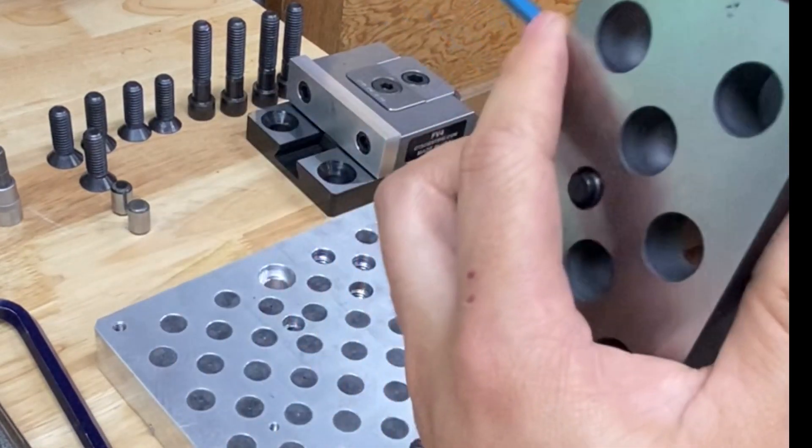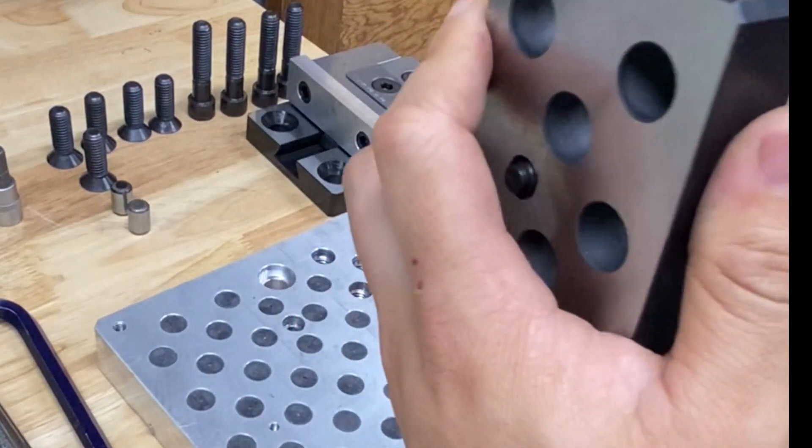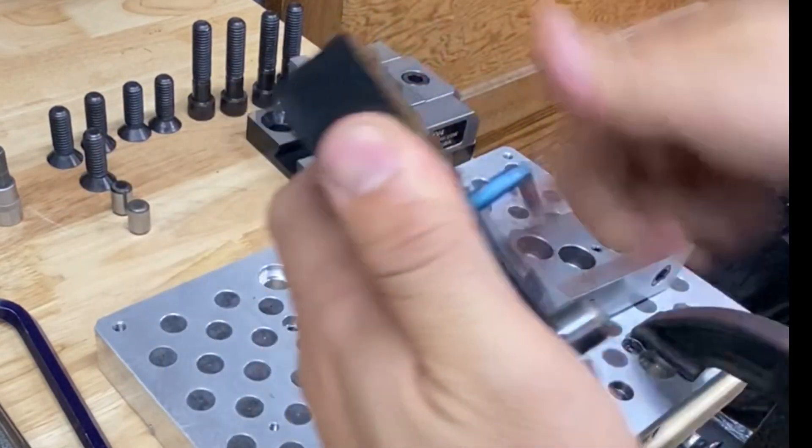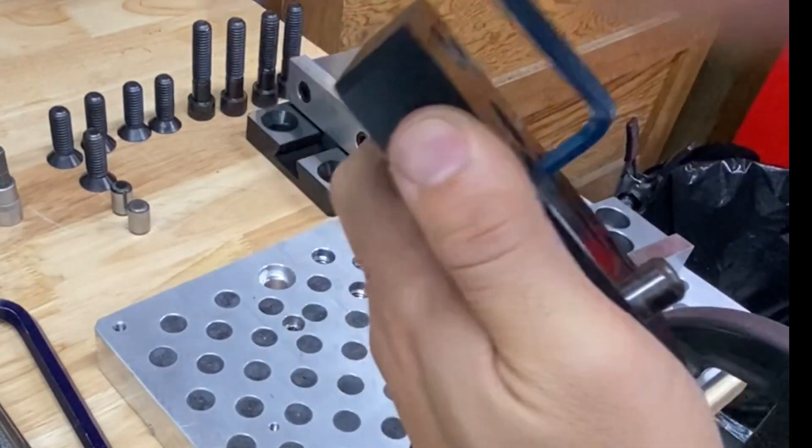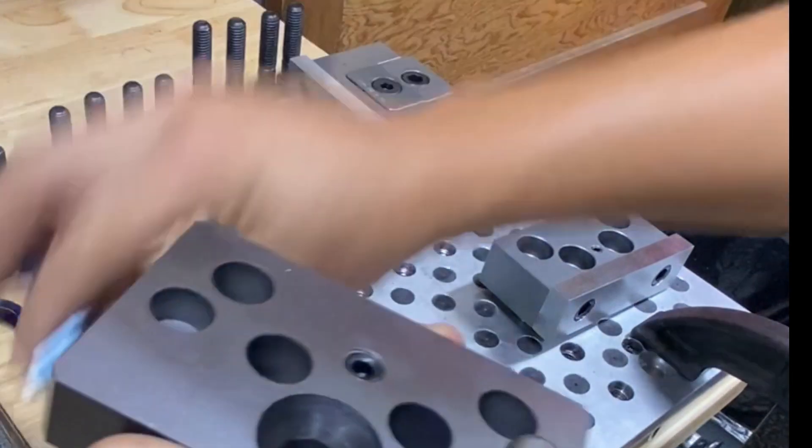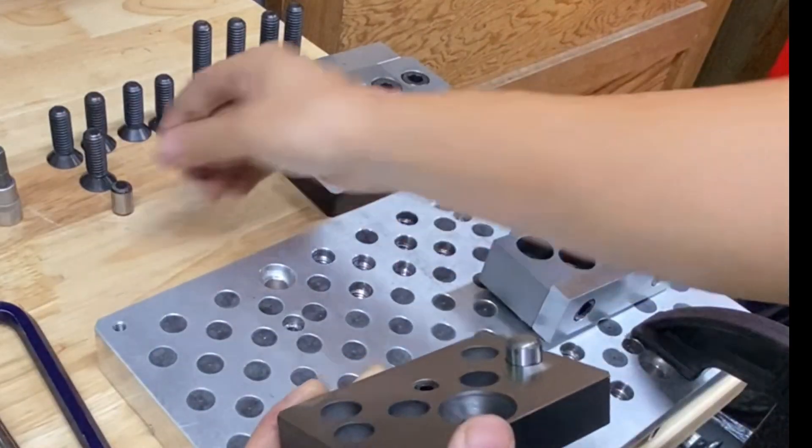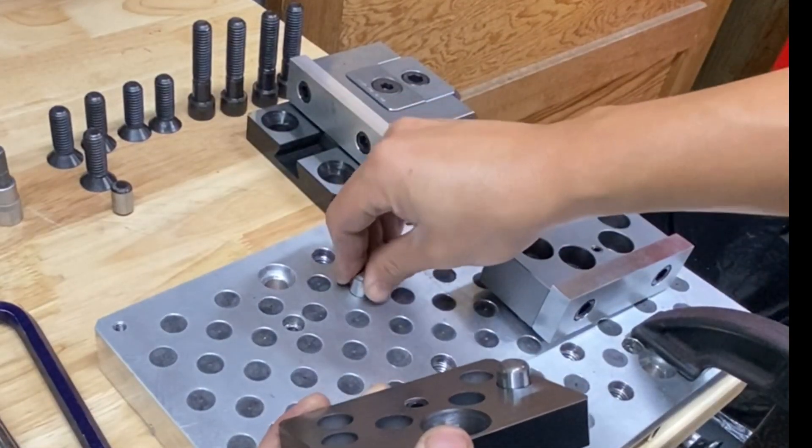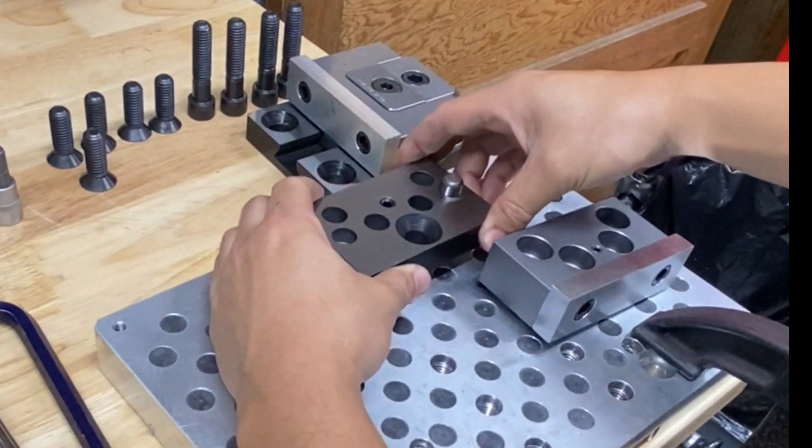This sort of jack screw is found on a number of workholding solutions, so I've just incorporated one here. You're going to put your two pins in first and then you're going to put your base down.